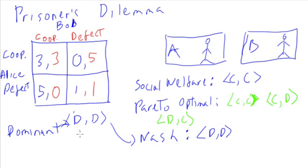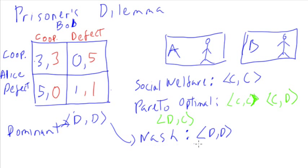That's the interesting thing about the prisoner's dilemma. You have this dominant strategy of defect-defect, and game theorists will tell you that if you're faced with this problem, you should defect. But common sense and social welfare ideals tell you that we could both be doing better over at cooperate-cooperate. If we just weren't being so rational all the time, we could be there — a total payoff of six versus two. That's the prisoner's dilemma.